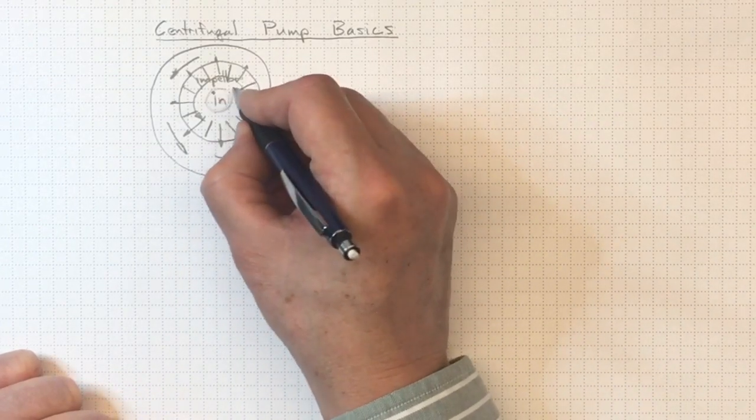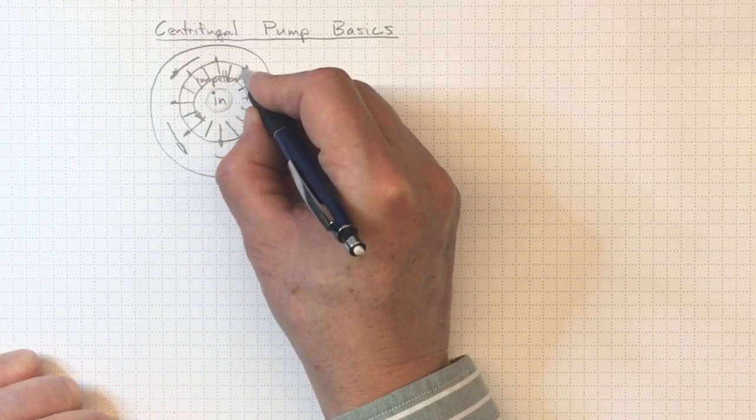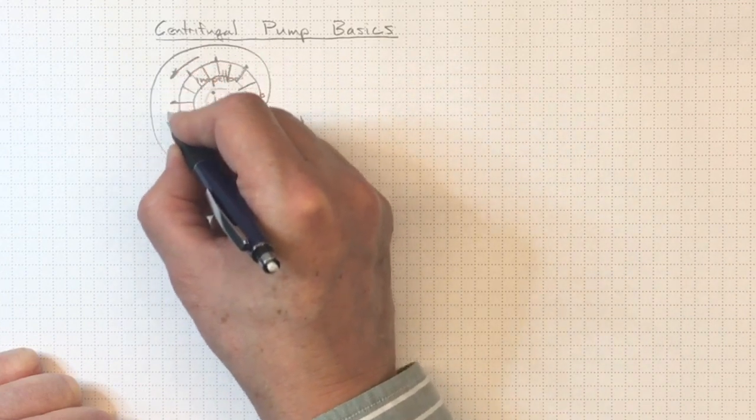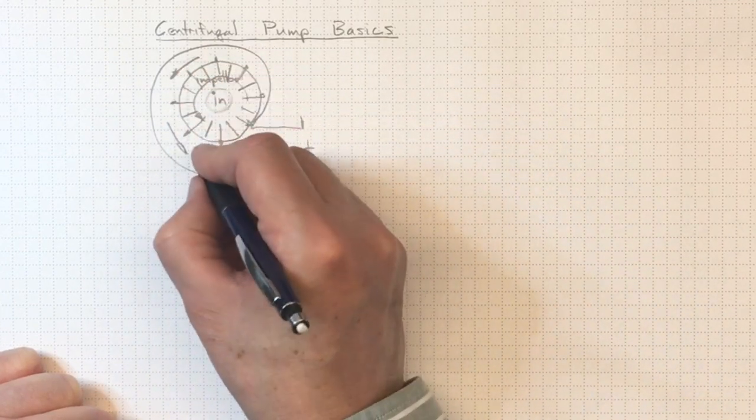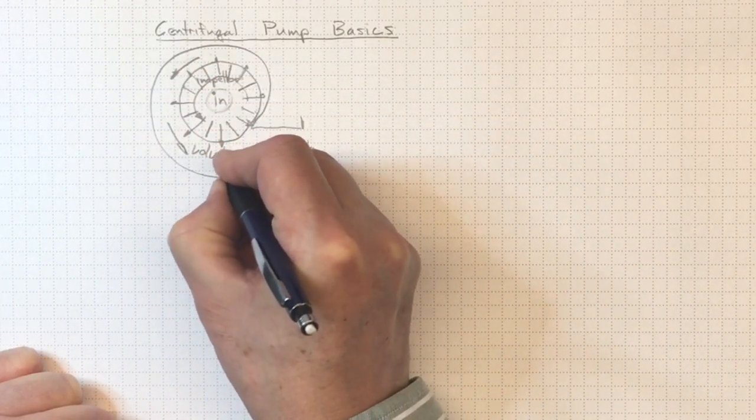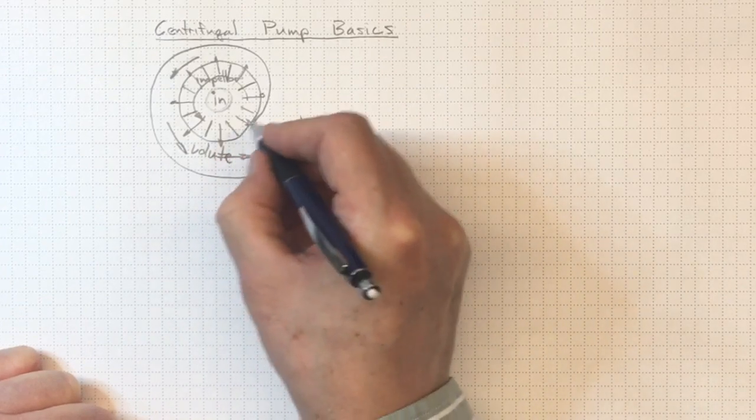So the result is, the fluid comes in the center, it's driven out to the outside of the impeller here, and it flows around this volute, which is the casing of the pump.